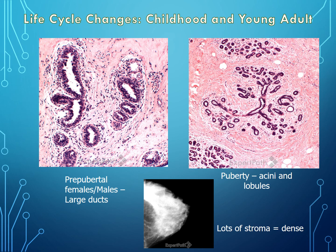Breast epithelium is hormonally responsive, so the histology of the breast changes as you go through different phases of life. In pre-pubertal histology you only have large ducts and very dense stroma. As you move into puberty, you get terminal ductal lobular units and formation of acini — the functional unit where milk production happens. The fibrous tissue around these TDLUs is very dense, which is why on mammography in younger patients the image is very white and very dense.